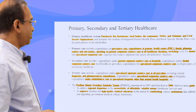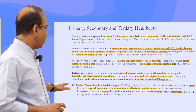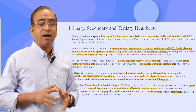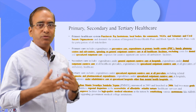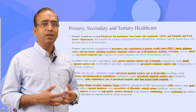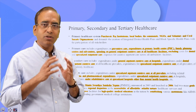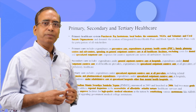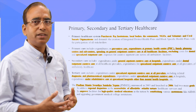Pradhan Mantri Swasthya Suraksha Yojana, announced in 2003 and launched in 2006, had two main goals. One is to make health care accessible and affordable — poor people need access, and there should be affordability when costs go up. A major focus was also on medical education, including paramedical and other services required to develop India's health ecosystem.